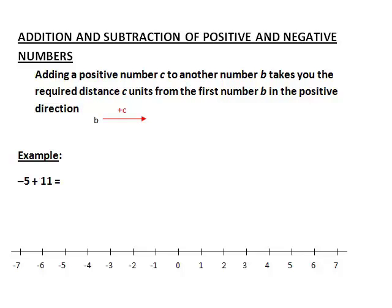Starting at the first number, that addition will take us the required distance from the first number in the positive direction. What do we mean by the positive direction? We mean moving from left to right. If we look at a number line we can see why that is called the positive direction. On the left hand side of zero we have negative numbers, while on the right hand side of zero we have increasing positive numbers. That is why moving to the right is called the positive direction.